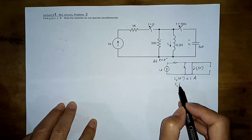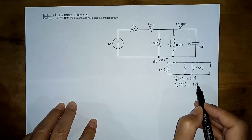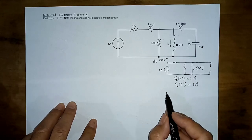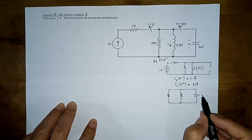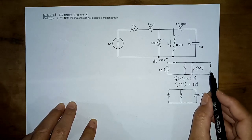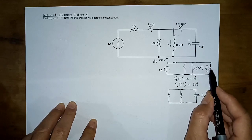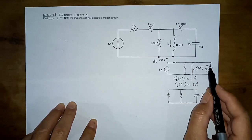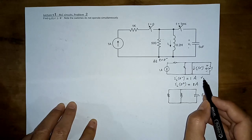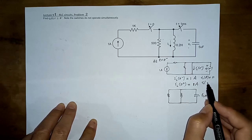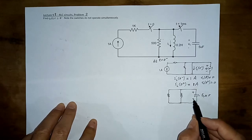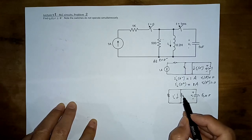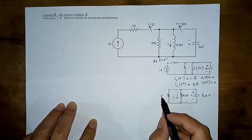So IL(0⁻) = 1 ampere. By the inductor property, after switching of the first switch it will still be 1 ampere. From the inductor's perspective, the circuit left behind has a 5 microfarad capacitor and a voltage source. The voltage on the capacitor before switching is 0 because the two points are the same, so VC(0⁻) = 0 and VC(0⁺) = 0 by capacitor continuity.